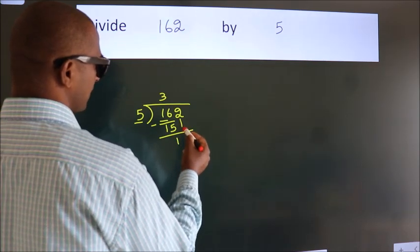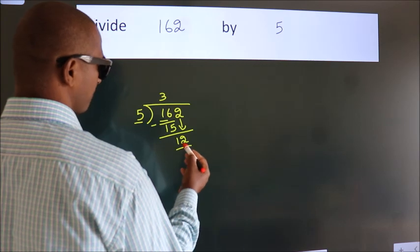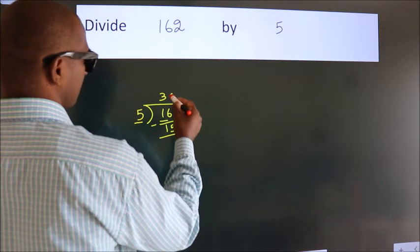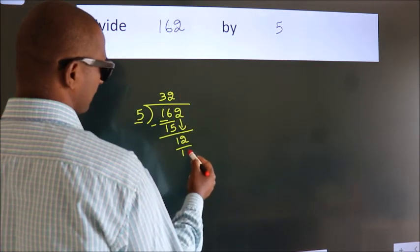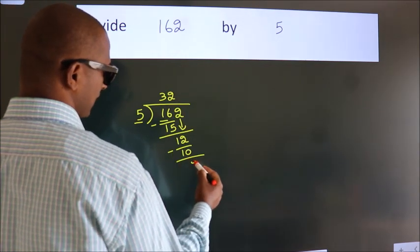After this, bring down the beside number. So, 2 down. So, 12. A number close to 12 in 5 table is 5 twos, 10. Now, we subtract. We get 2.